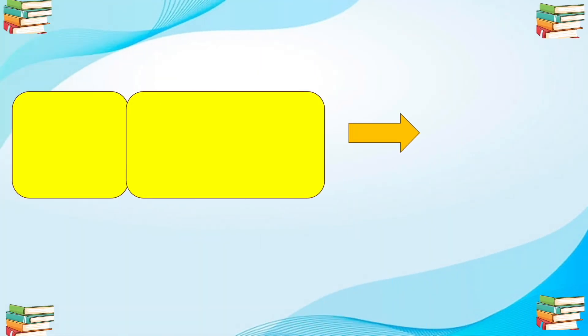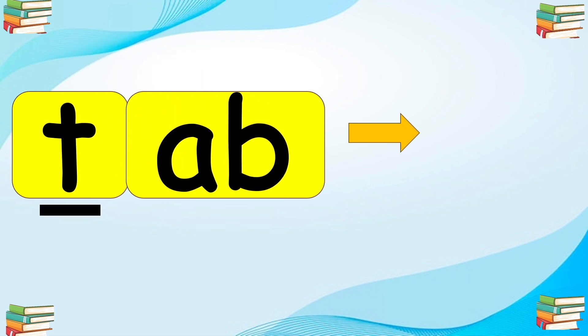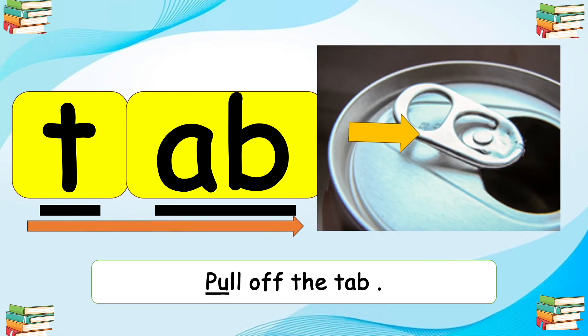Next, we have T-ab, T-ab, tab, tab. Pull off the tab. Your turn.